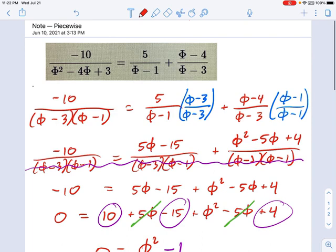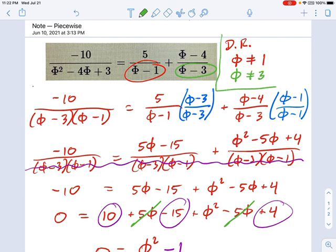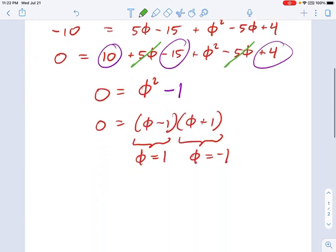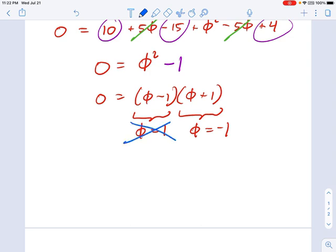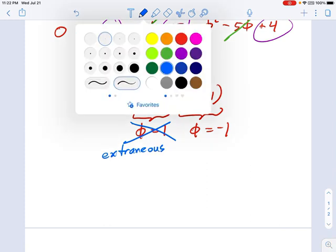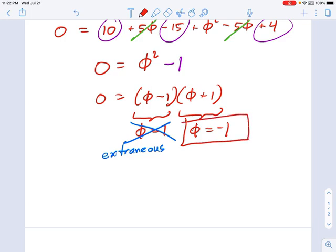We never checked the domain restrictions, or we forgot to earlier. Remember what domain restrictions are. That's where your denominator would equal 0. So from this one right here, I'm going to say phi cannot equal 1. Okay, and from this other one right here, I'm going to say phi cannot equal positive 3. So let's think about that, and compare it to what we just got down here. And you see one of these does not work. Okay, so that is an extraneous solution. And we only have one solution that works. Here's our final answer for this problem. Phi equals negative 1. And we're done.